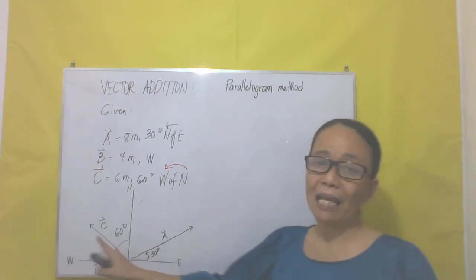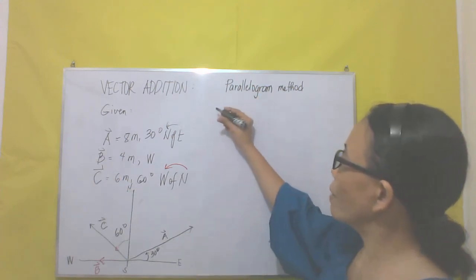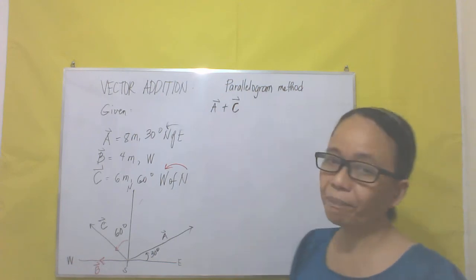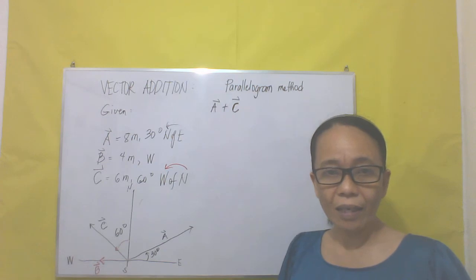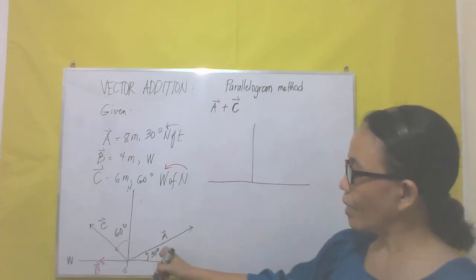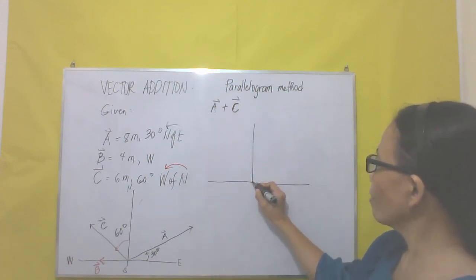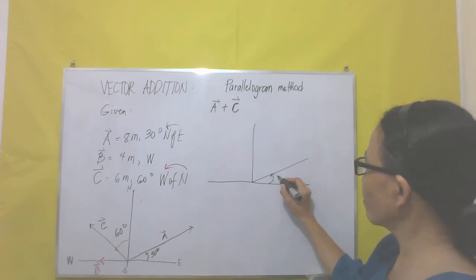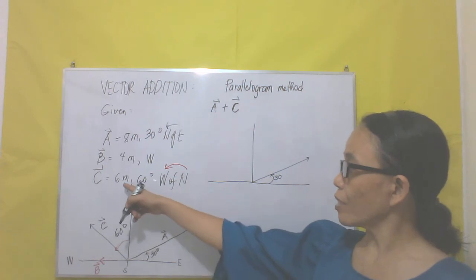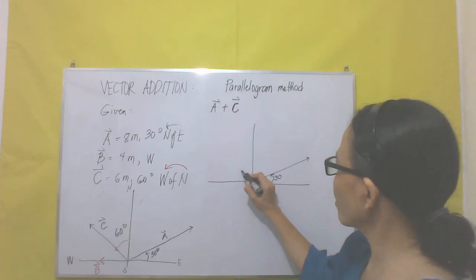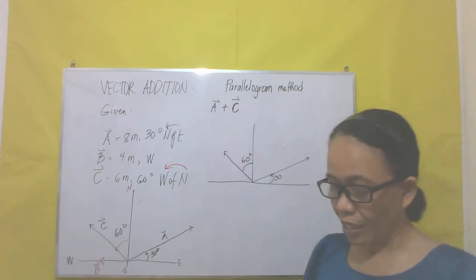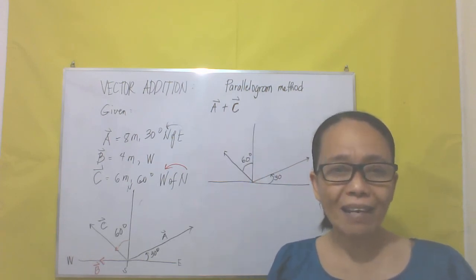So let us add vector A plus vector C using the parallelogram method. We are going to draw a Cartesian plane. Vector A is 8 meters at 30 degrees, so 30 degrees is somewhere here. Next, vector C is 6 meters, 60 degrees west of north.